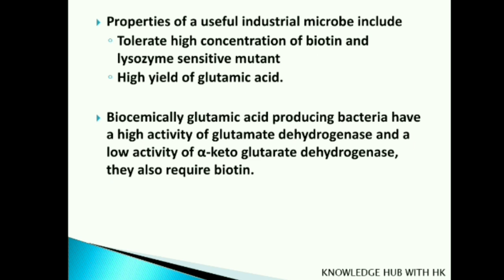Properties of useful industrial microbes include the ability to tolerate high concentrations of biotin, being lysozyme-sensitive mutants, and yielding high concentrations of glutamic acid. Biochemically, glutamic acid-producing bacteria have high activity of glutamate dehydrogenase and low activity of alpha-ketoglutarate dehydrogenase. They also require biotin, and the biotin concentration in the fermentation medium has a significant influence on the yield of glutamic acid.